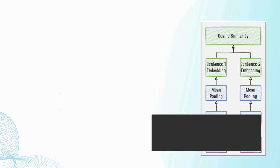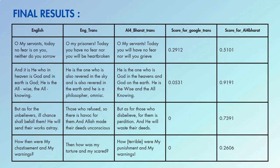Looking at the results: we can see the original English sentence, the Google Translated sentence, and the AI4Bharat Translated sentence. After calculating the STS score for Google Trans, we obtained the 'Score for Google Trans' column. After calculating for AI4Bharat, we obtained the 'Score for AI4Bharat' column. Comparatively, almost every record shows AI4Bharat Translator performing better. This conclusion holds after performing the process across many datasets.